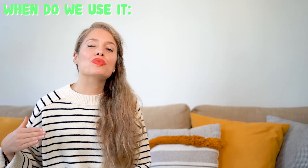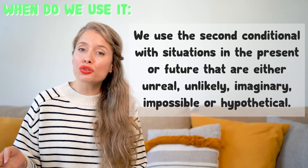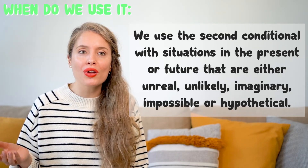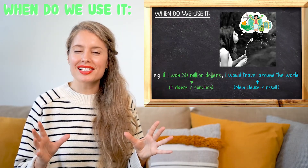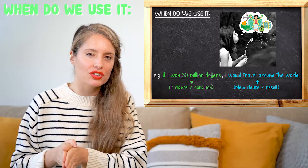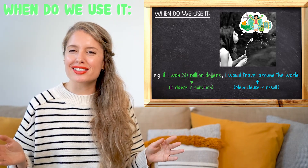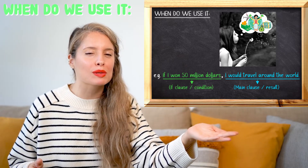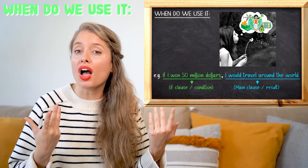We use the second conditional with situations in the present or future that are unreal, unlikely, impossible, imaginary, or hypothetical. Let's examine that first example: 'If I won $50 million, I would travel around the world.' What are the chances of winning $50 million? Almost impossible and definitely unlikely — so this is a perfect example of the second conditional.